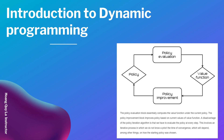Let's look at the diagram showing the iterations of these two processes — policy evaluation and policy improvement. As you can see, from the policy improvement we go to the policy, then it evaluates the policy and produces the value function. This is a closed-loop system. The policy evaluation block computes the value function under the current policy, and the policy improvement block improves the policy based on the current value function. A disadvantage of the policy iteration algorithm is that we have to evaluate the policy at every step, involving an iterative process where we do not know the prior convergence time, which will depend on how the starting policy was chosen.